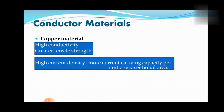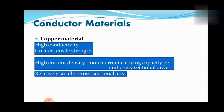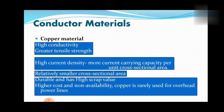Copper has a high current density, which means more current carrying capacity per unit cross-sectional area. Therefore, copper conductors have relatively smaller cross-sectional area. Also, copper is durable and has high scrap value. However, due to its higher cost and non-availability, copper is rarely used for overhead power lines.